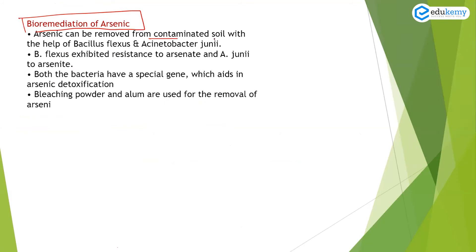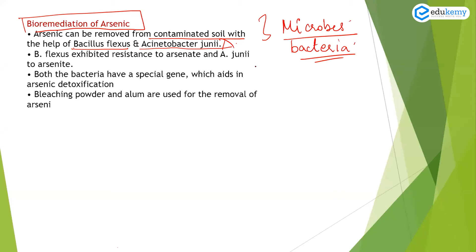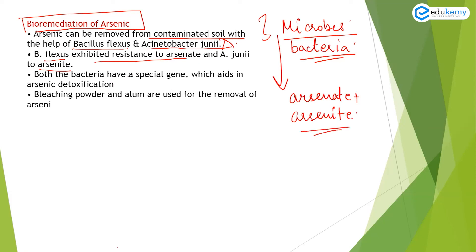Arsenic can be removed from contaminated soil with the help of bacteria such as Bacillus flexus and Acinetobacter. You don't need to remember these names — just remember that bioremediation of arsenic is possible using microorganisms, especially bacteria. Both Bacillus flexus and Acinetobacter exhibit resistance to arsenic and have a special gene that leads to detoxification. Apart from that, bleaching powder and alum are also used for removal of arsenic.